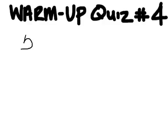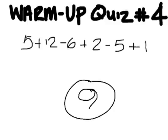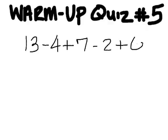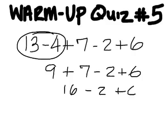Number four. Answer on this is 9. Everybody had it? Last one. 13 minus 4 is 9. And then you have to do 9 plus 7 which is 16. 16 minus 2 is 14. Plus 6 is 20.